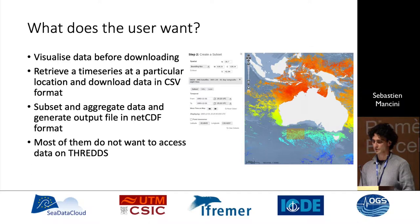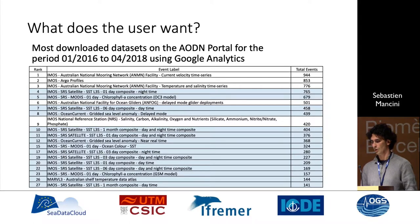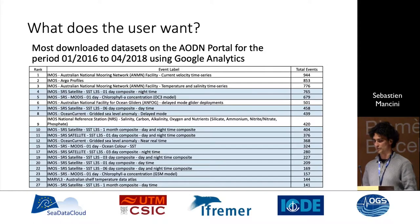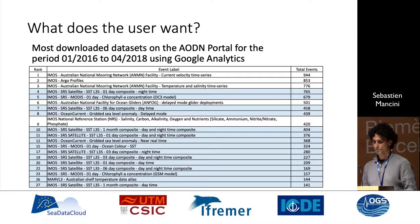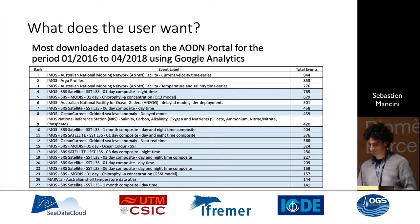As we heard from the previous presentation, most users don't want to go to the THREDDS catalog and access THREDDS — that's for the geeky people. Most of them want to use the portal. We've been using Google Analytics for four years on our portal to track what people are visualizing, the facets they're using, and the datasets they are downloading. Here you can see a table of the most downloaded datasets for a period of two and a half years. The top three are Argo or mooring data, but then a lot of the satellite and gridded datasets are in the top 10 to top 20. So that's very important to us.